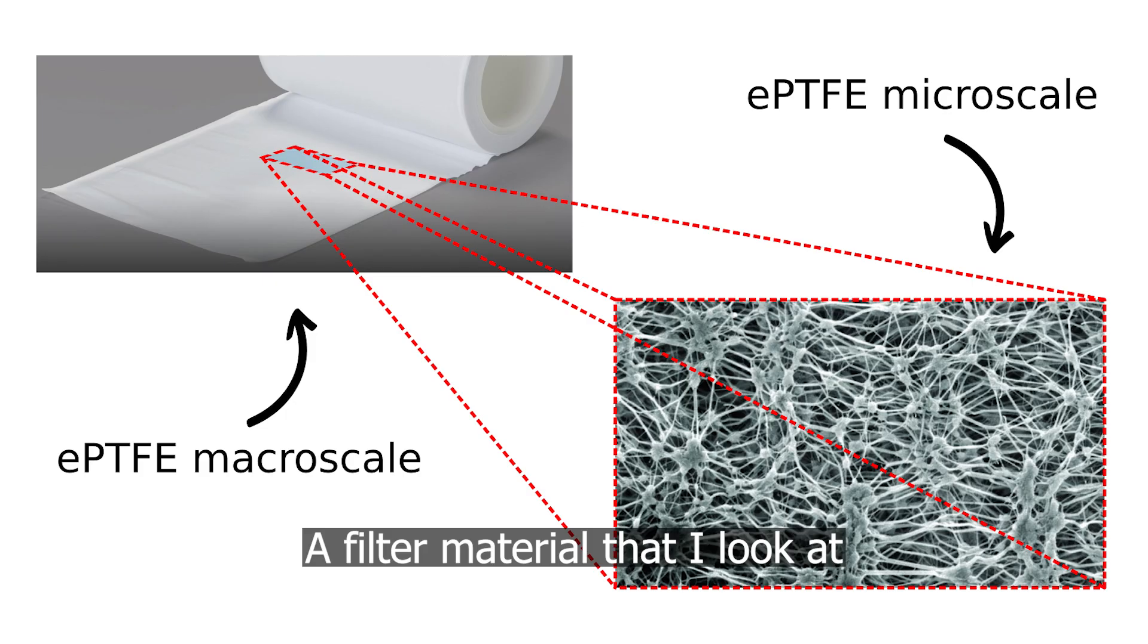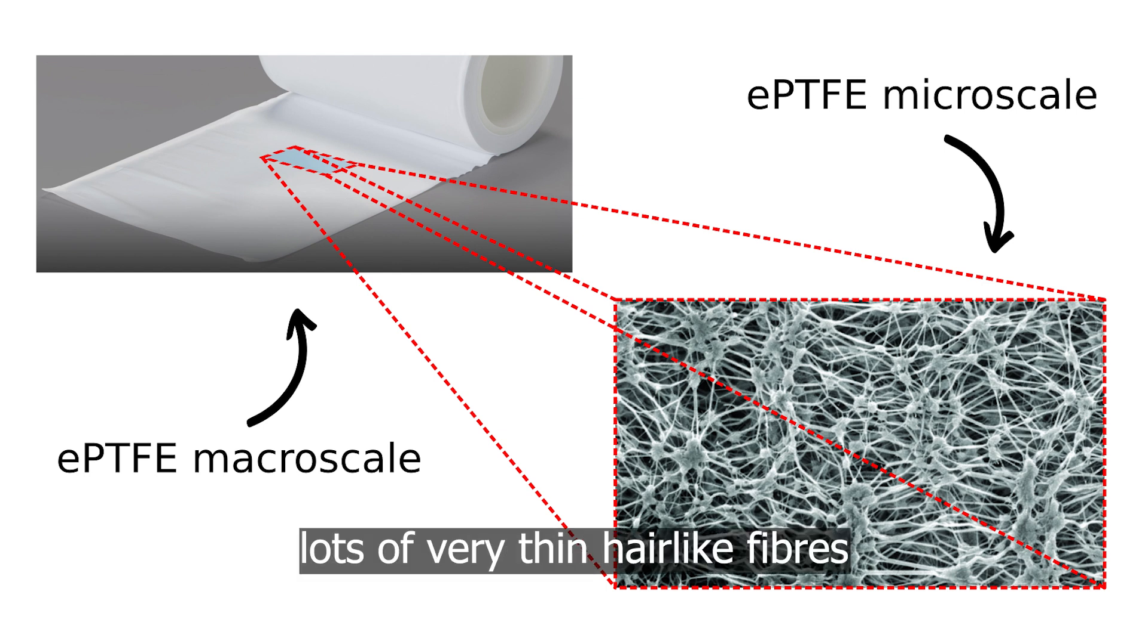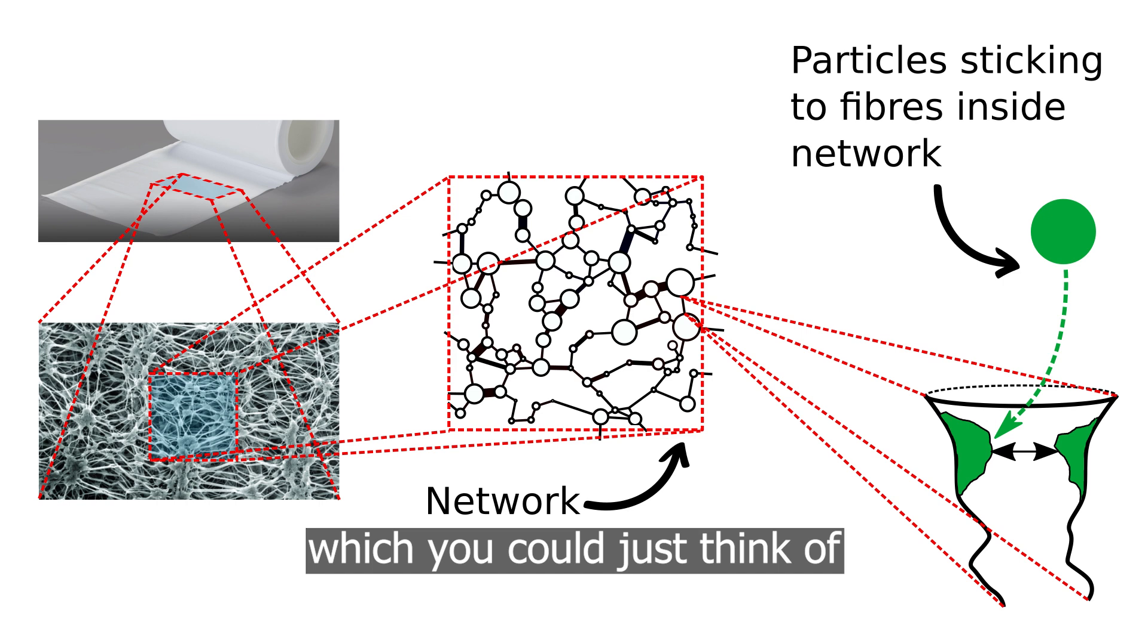A filter material that I look at is ePTFE. What you see is lots of very thin hair-like fibers crossing each other randomly. ePTFE behaves quite similarly to a mathematical object called a network, which you could just think of as a system of pipes that conduct flow that are connected at junctions.